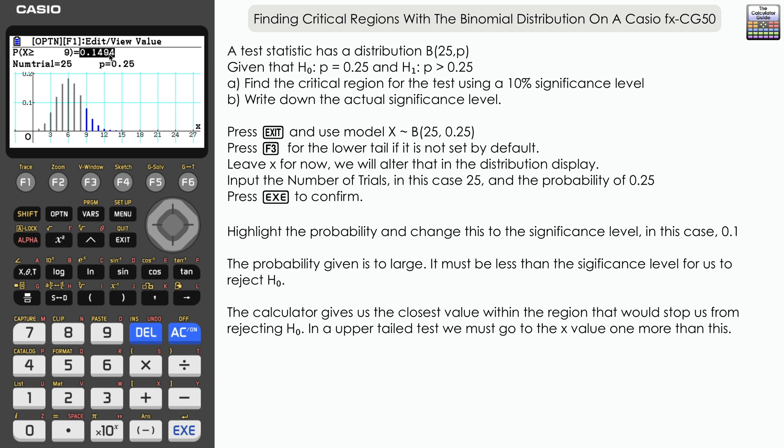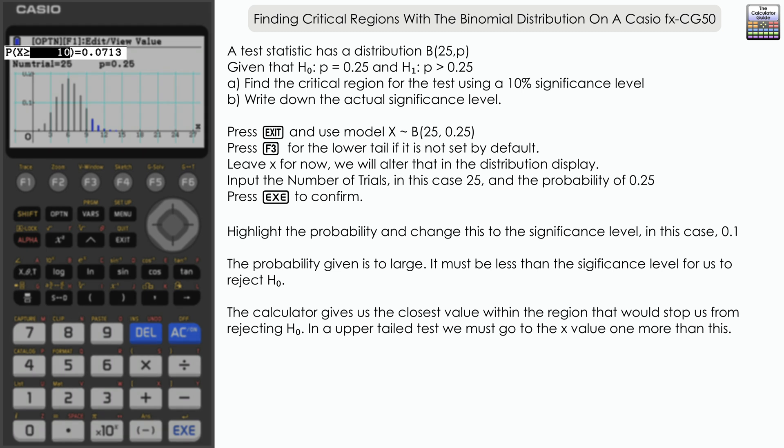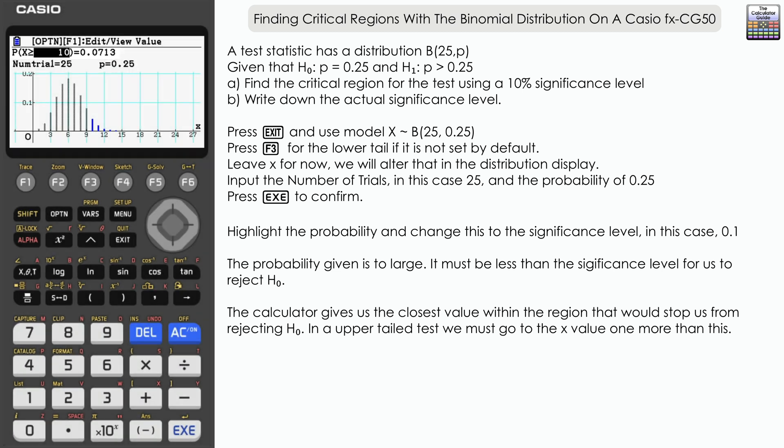So we just need to alter that to 10 and press execute. And you can see here the probability for being greater than or equal to 10 is 0.0713. That is less than 0.1, a 10% significance level. 10 is essentially the lowest value that would cause us to reject H₀ in favor of H₁.